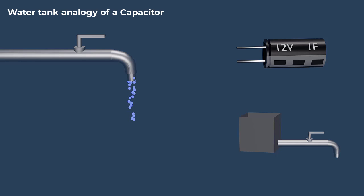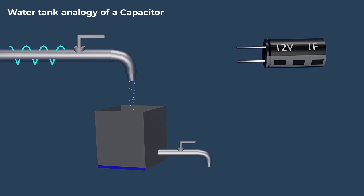However, if the water pressure in the pipe fluctuates, the water flow will also fluctuate, and the steady flow will be interrupted. To maintain a steady flow of water, a water tank is necessary.